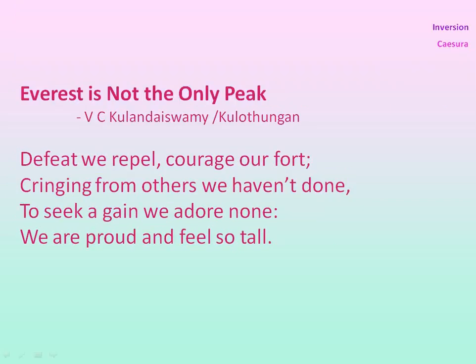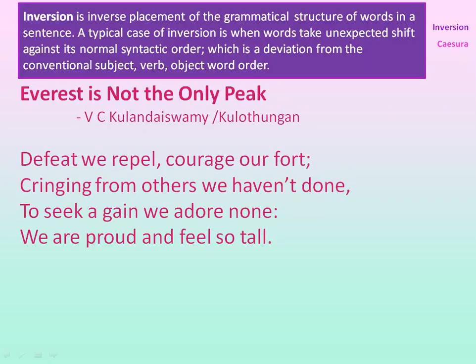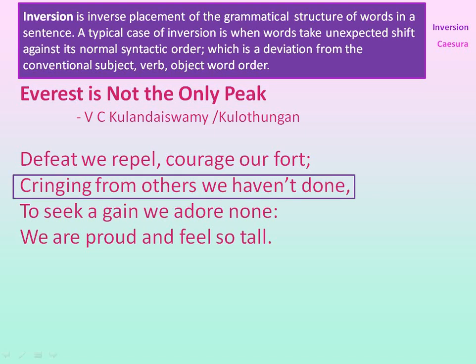In the next stanza, inversion is used in the second line: 'cringing from others, we haven't done.' The normal structure should have been 'we haven't done cringing from others' or 'we haven't cringed from others.' Here there is a change in structure — 'cringing from others, we haven't done' — hence inversion.